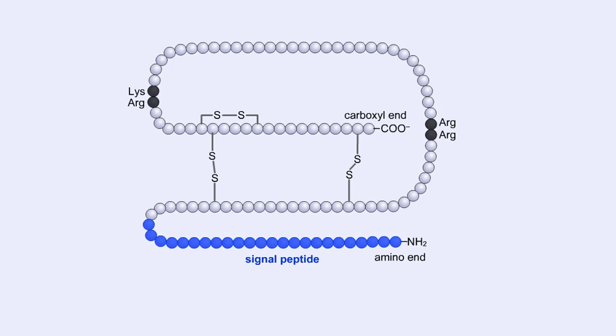Insulin was the first protein whose primary sequence was determined by Frederick Sanger in 1953.